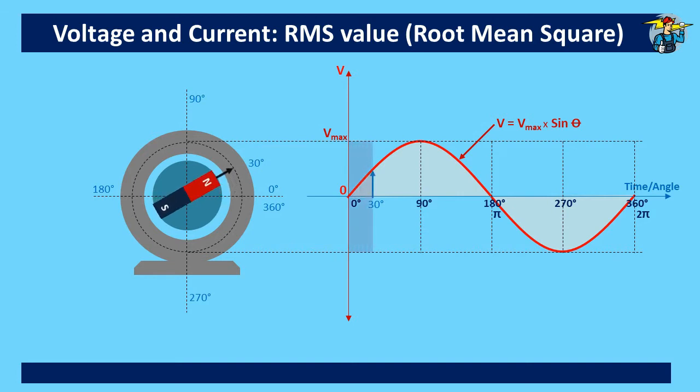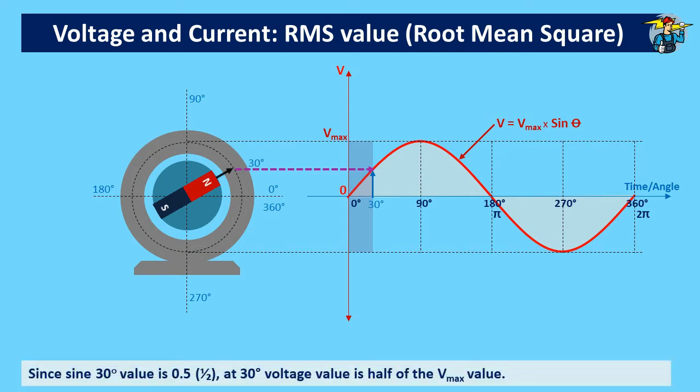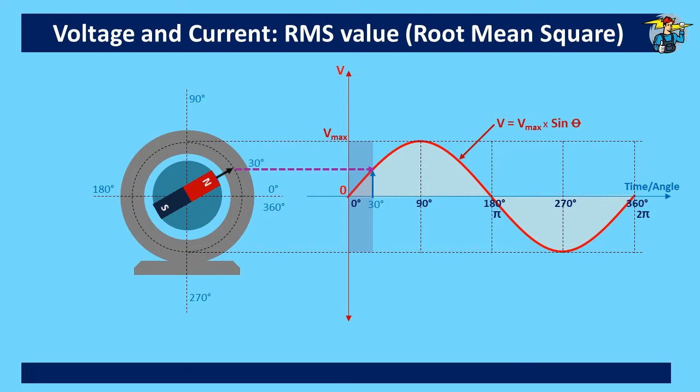When you turn the magnet to 30 degrees, voltage value is half of V_max since the sine value of 30 degrees is 0.5. When you turn the magnet by another 30 degrees to make it 60 degrees, voltage value is 0.866 times its maximum voltage value since sin 60° is 0.866. After turning the magnet by 90 degrees, voltage at this point produces its maximum voltage since the value of sin 90° is 1.